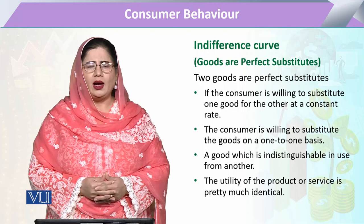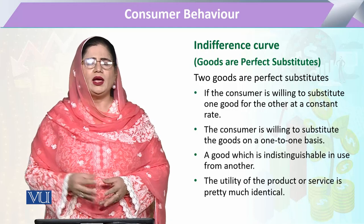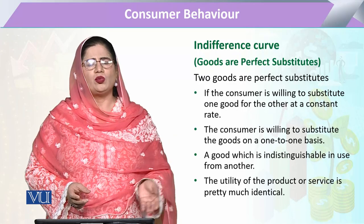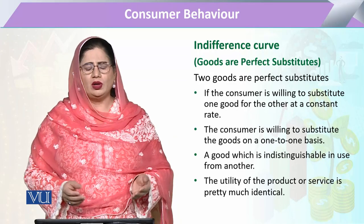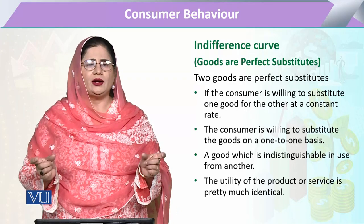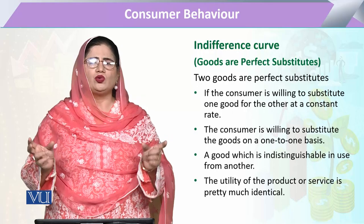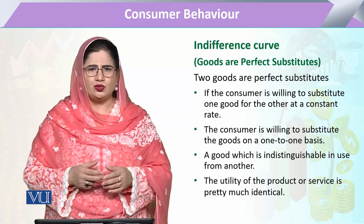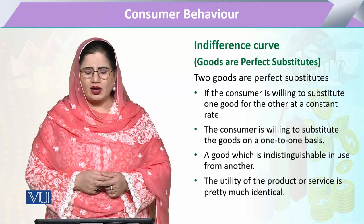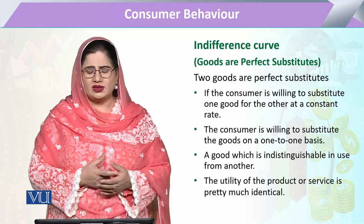If a consumer leaves one commodity and wants to take another commodity at a one-to-one rate, then those two will be perfect substitutes to each other. And if the consumer wants to decide between both at a one-to-one rate, they are perfect substitutes.